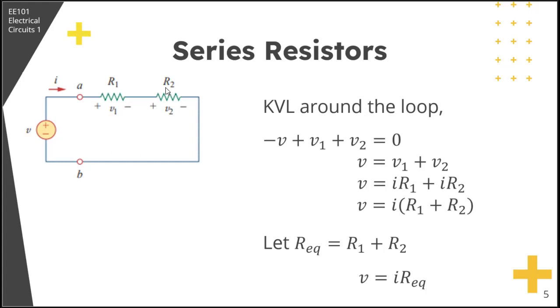Consider this circuit. If we apply KVL around the loop, that would be negative V plus V1 plus V2 equal to 0. Then we rearrange the equation, so we have V equal to V1 plus V2. And V1, as you can see in the circuit, V1 is just equal to I times R1, and V2 is just equal to I times R2.